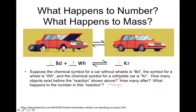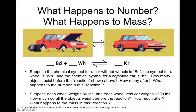But what happens to the mass? Suppose each wheel weighs 80 pounds and each car body weighs 1,200 pounds. So the mass of BD is 1,200 pounds. The mass of the four wheels is 4 times 80, which gives us 320 pounds.